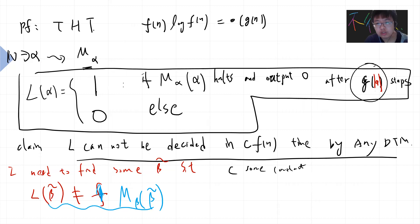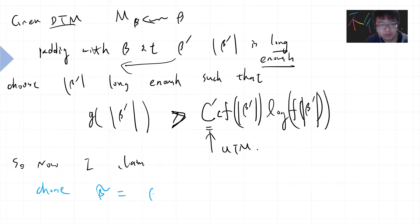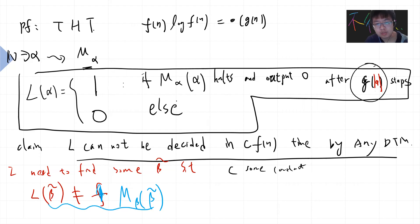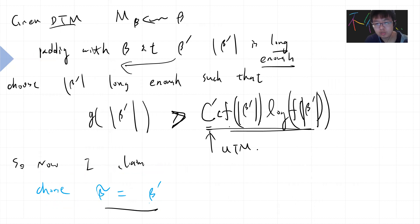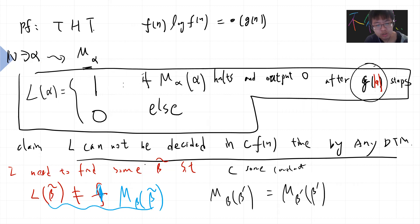The obvious choice is just to set beta-theta equal to beta-prime. The proof then finishes: when I choose beta-theta to be beta-prime, by definition M_beta on beta-prime is M_beta-prime on beta-prime, which either halts and outputs zero or not. But L gives the negation of that output. And since I chose g(|beta-prime|) to be larger than c · f(|beta-prime|) · log f(|beta-prime|), the universal Turing machine simulator always finishes. This is the diagonalization contradiction — L cannot be decided by any such M_beta.